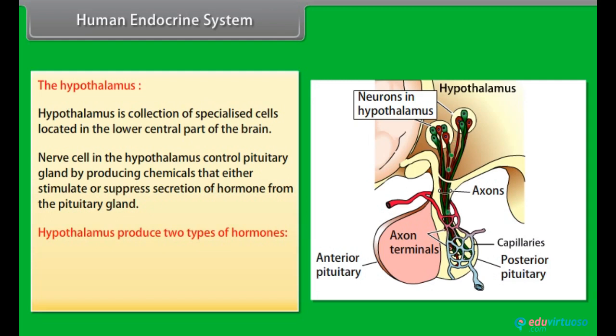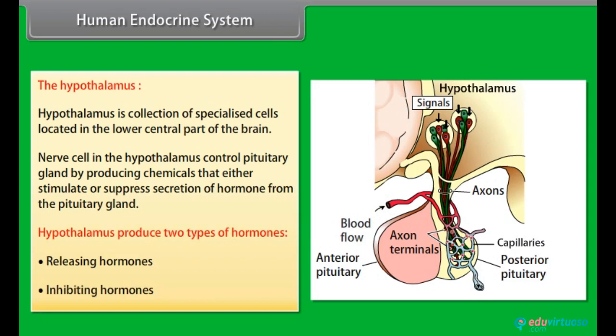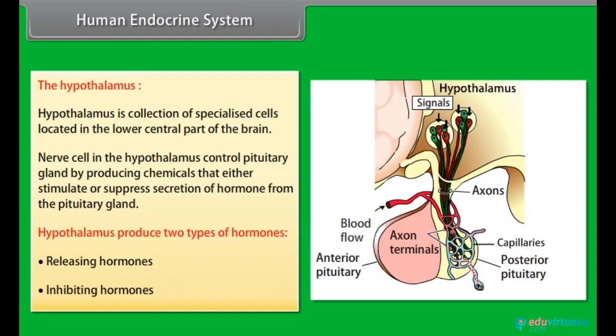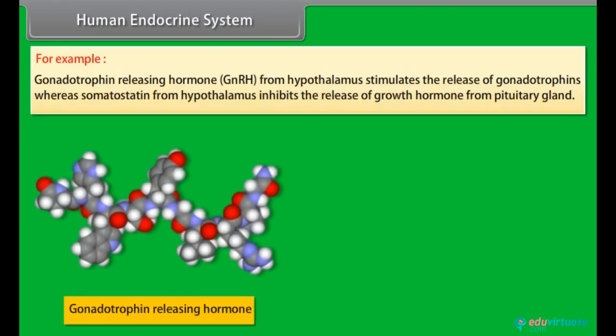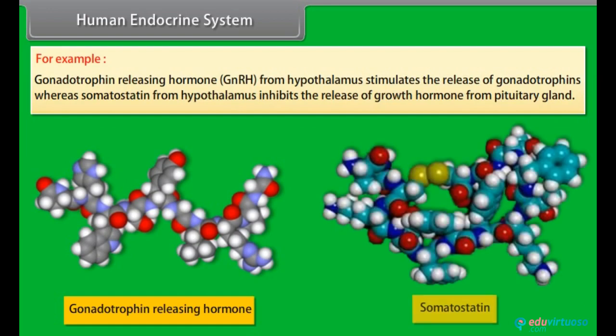The hypothalamus produces two types of hormones: releasing hormones and inhibiting hormones. For example, gonadotrophin releasing hormone from the hypothalamus stimulates the release of gonadotrophins, whereas somatostatin from the hypothalamus inhibits the release of growth hormones from the pituitary gland.